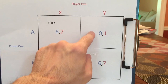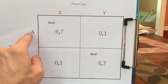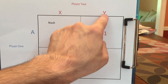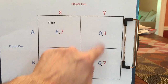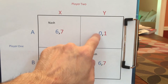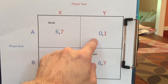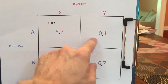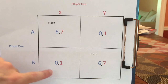What about AY? Player one would say: I played A, he played Y. If I'd known he'd play Y, I would have preferred to play B. So I regret — that makes AY not a Nash Equilibrium. Player two also regrets, but you only need one person to regret to have it not be a Nash Equilibrium.